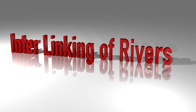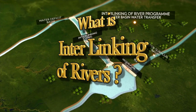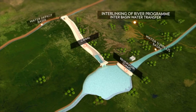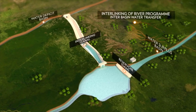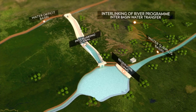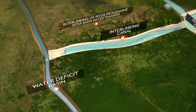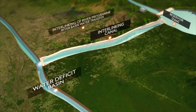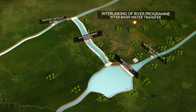Interlinking of rivers involves diversion of water over space and time from water surplus basins to water deficit basins. Inter-basin transfer of water is commonly known as the interlinking of rivers program.